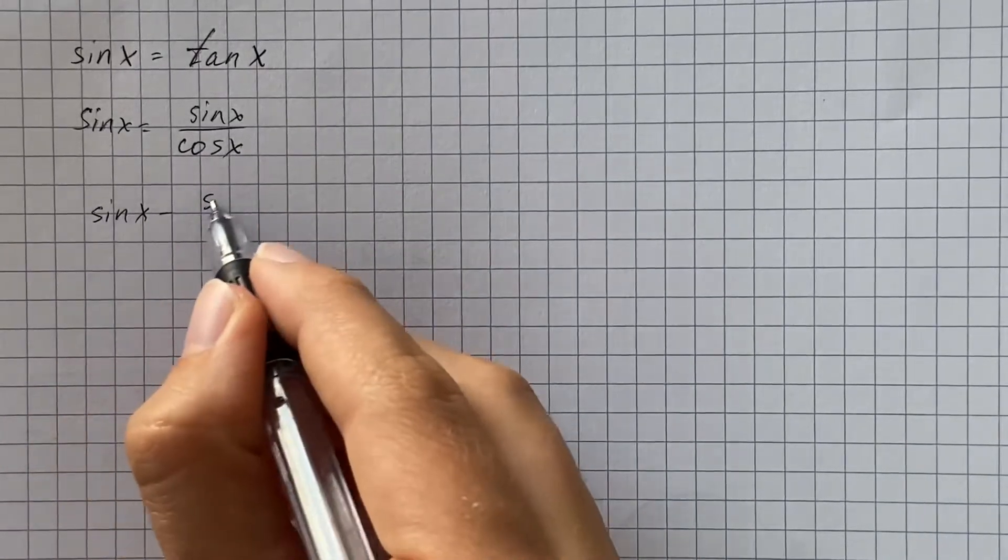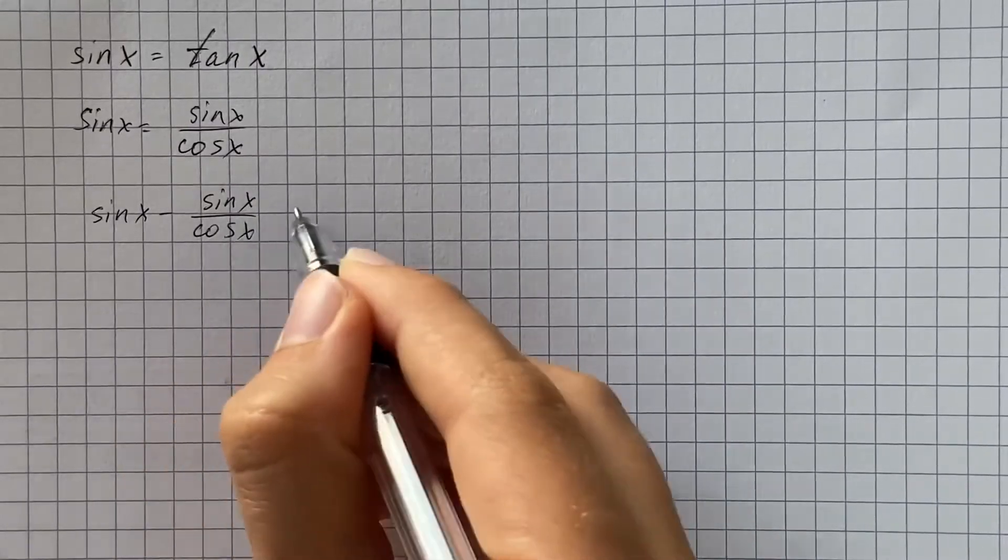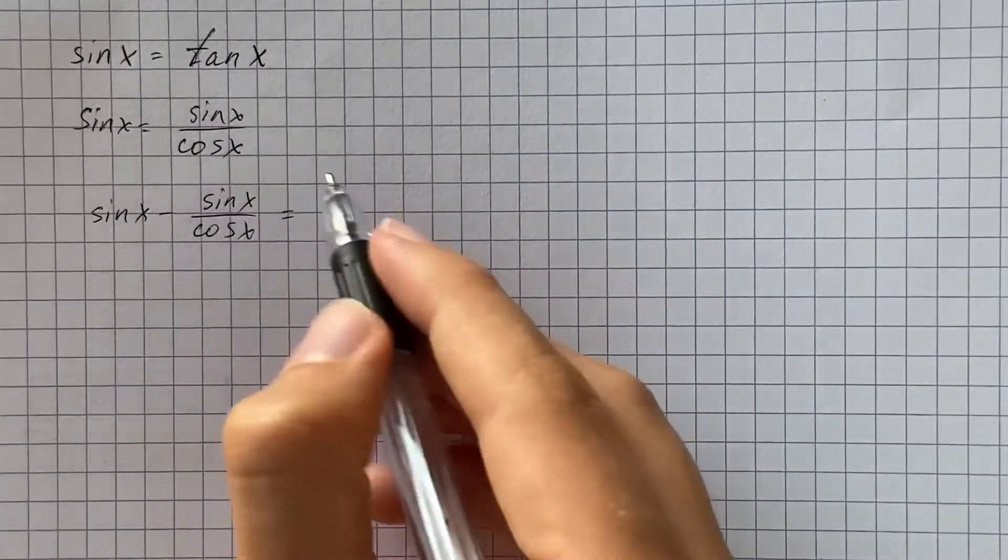It's going to be sine of x minus sine of x over cosine of x, and then we'll make one side equal to 0.